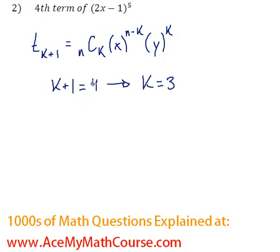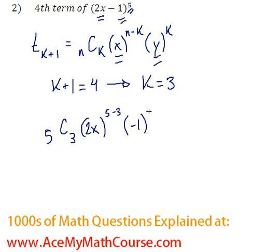Now I can plug everything in. n is 5, so 5C3, 2x is our first term to the power of n minus k times negative 1, which is our second term to the power of k.